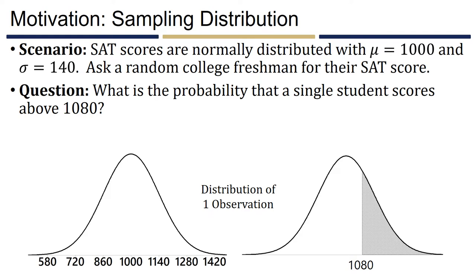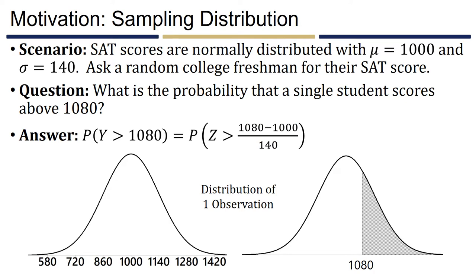We already saw that the probability a single student scores above 1,080 is just over 28%. Let Y be the random variable denoting the SAT score of a single student. We want P(Y > 1,080). Because SAT scores are normally distributed, we standardize 1,080: (1,080 − 1,000) / 140 = 0.57. Using the standard normal table to find the area above z = 0.57 gives a probability of 0.2843.